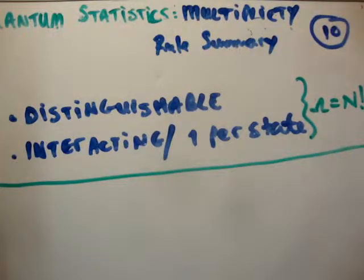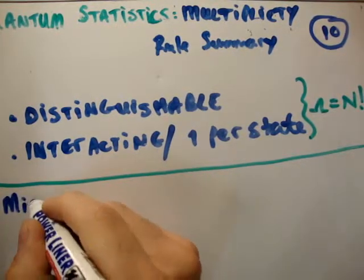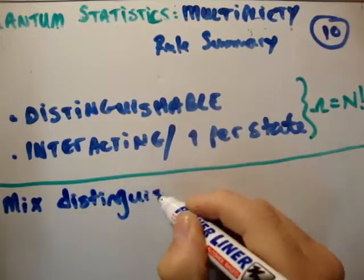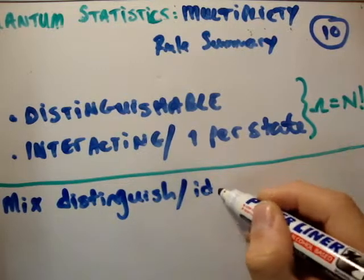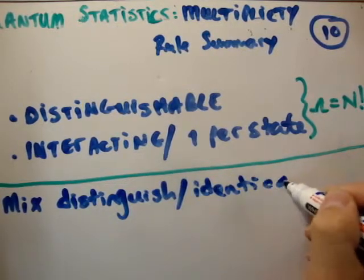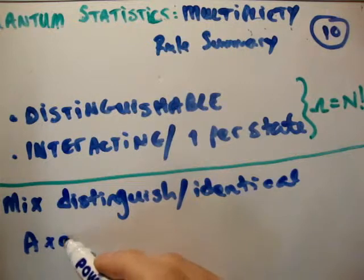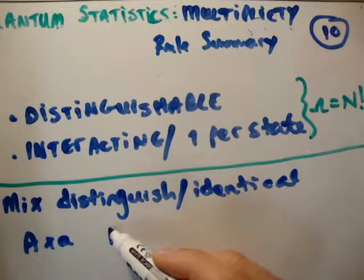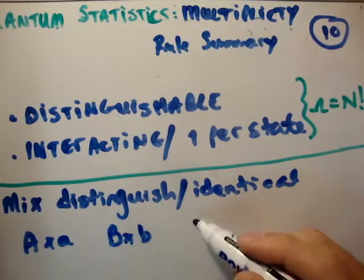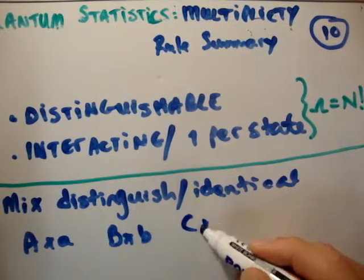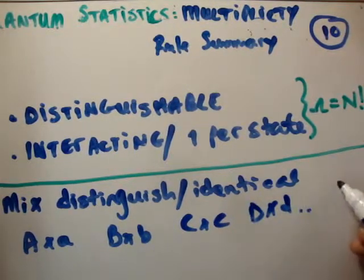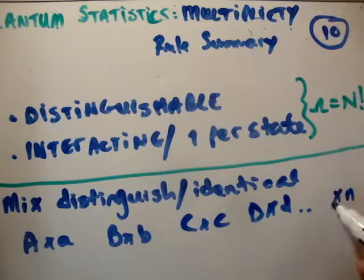Now, what happens if we have a mixture of distinguishable and identical particles? Let's say we have species A times capital A. We have small a of capital species A, we have small b of capital species B, we have small c of species C, we have small d of species D, and so on. So we have small n of species capital N.